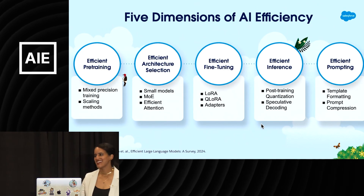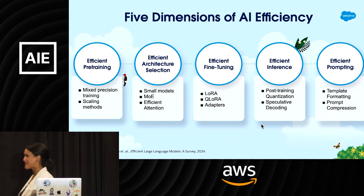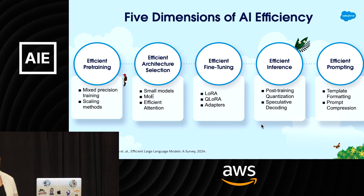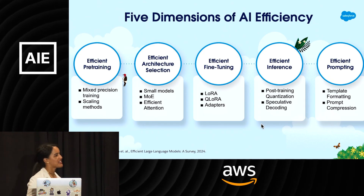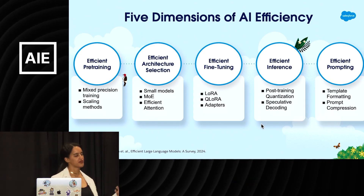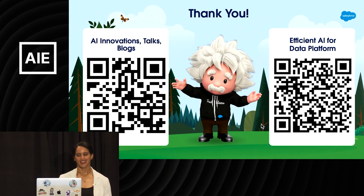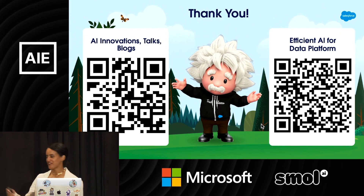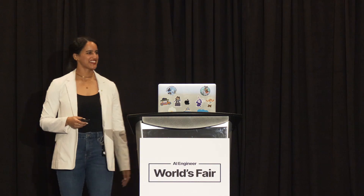That wraps up the content for today. It was absolutely great being here. Remember these five dimensions of AI efficiency as you're building and deploying your models. Thank you so much — feel free to check out the QR codes.